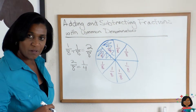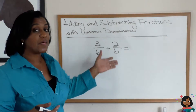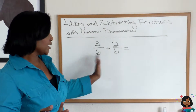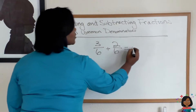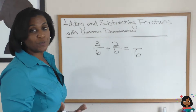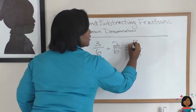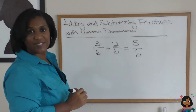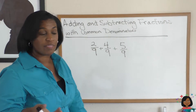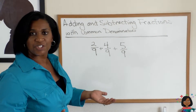Let me give you another example. I have 3/6 plus 2/6, and again the rule is keep your denominator the same — so it's going to be over 6 — and add your numerators: 3 plus 2 is 5. My answer is 5/6.